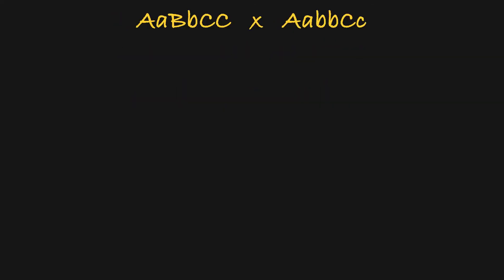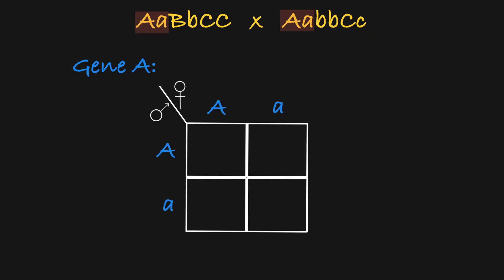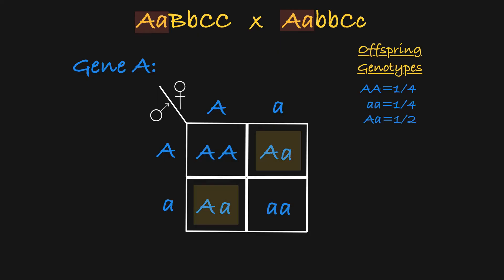If we look at gene A, both parents are heterozygous, so if we set up a small Punnett square, we can see that one quarter of the offspring will be homozygous dominant, one quarter will be homozygous recessive, and one half will be heterozygous.